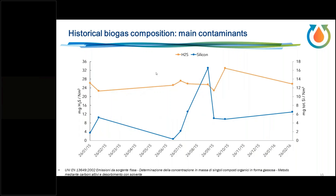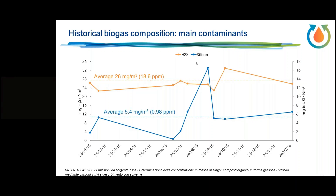Over one year of measurement, the sulfur in this biogas is almost entirely H2S, with an average of approximately 26 mg/m³, equivalent to around 19 ppm. For silicon, the most abundant siloxane is D5 — a cyclic compound — at an average of 5.4 mg/m³, equivalent to around 1 ppm. These are the starting values that must be cleaned to reach the solid oxide fuel cell producer's target specifications.